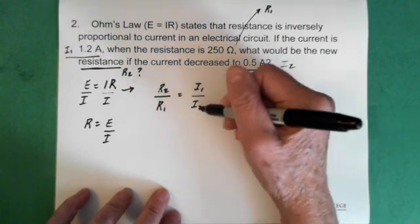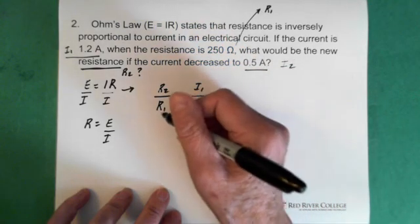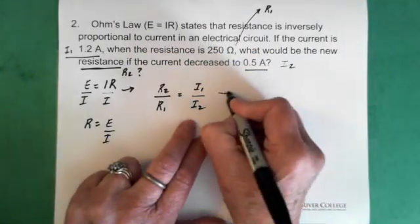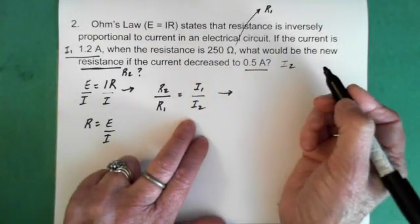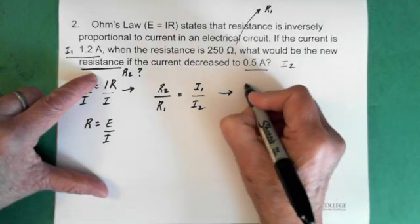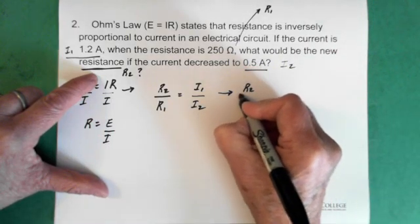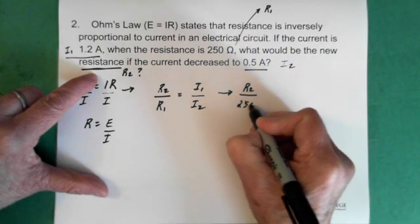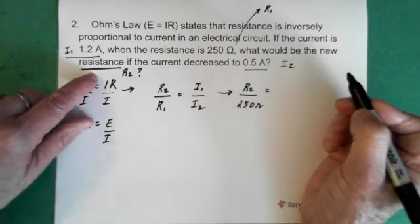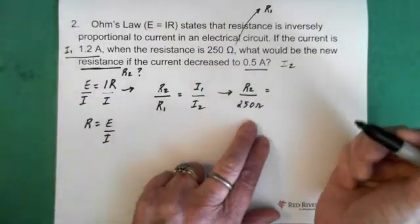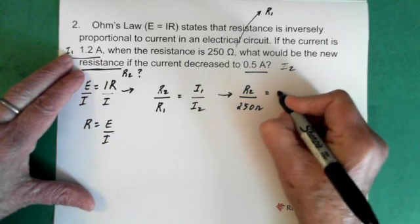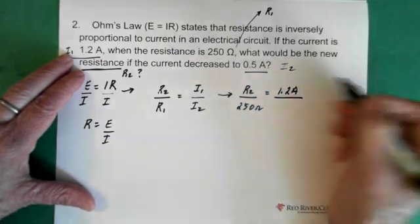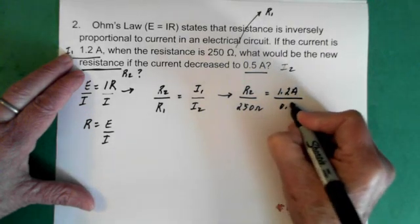The R2 and the I2 are inverse here, and the R1 and the I1. So then we can plug in our numbers. So R2 is our question mark. That's the thing we don't know right now. R1 is the 250 ohms. I1 is 1.2 amps, and I2, 0.5 amps.